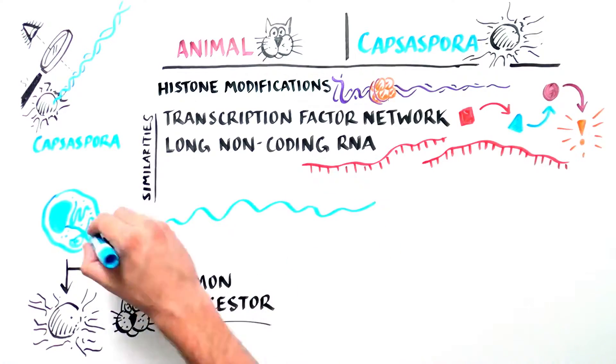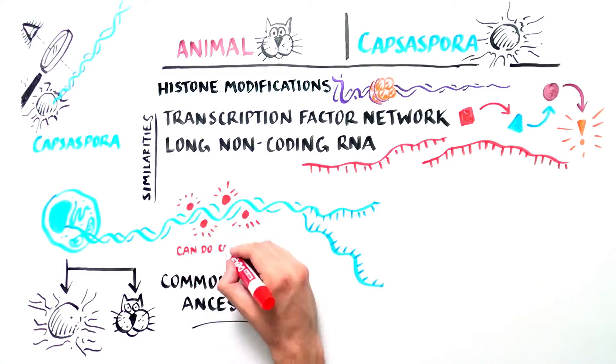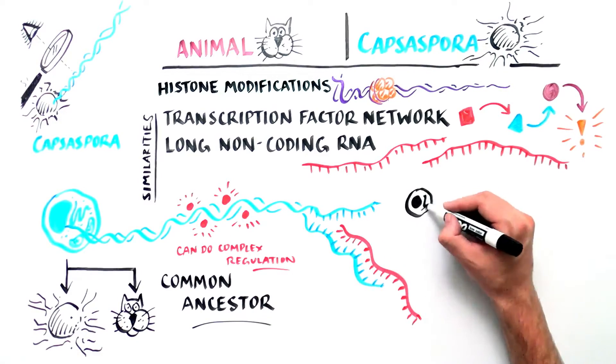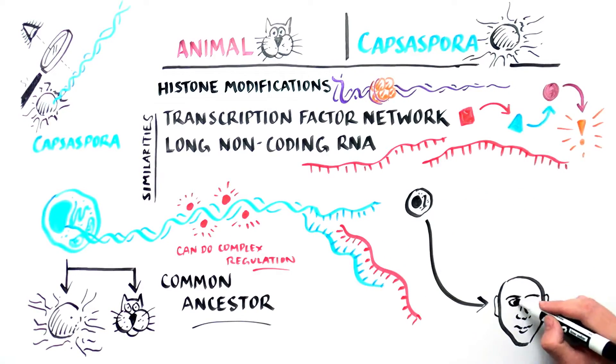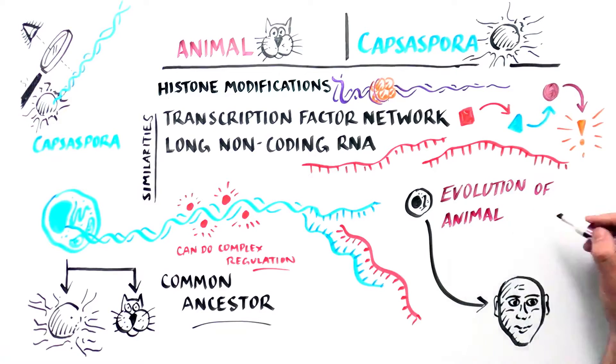was already capable of complex genetic regulation. Then, what regulatory mechanism was responsible for the evolution of animal multicellularity?